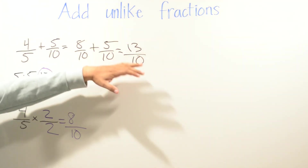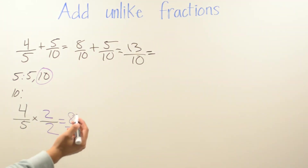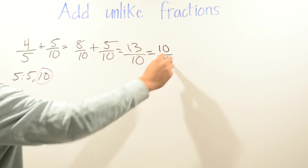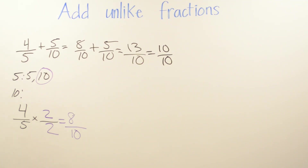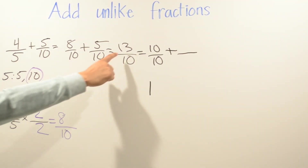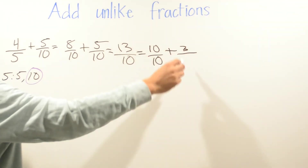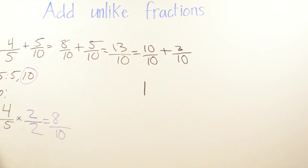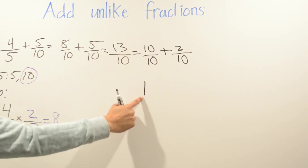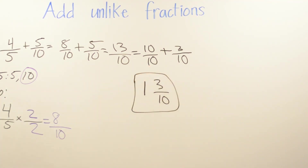Now the denominator 10 is smaller than the numerator 13, so we can write it as a mixed number. Ten-tenths equals one whole. Then how many more do I need to get to 13? I already have 10, so: 11, 12, 13 — I need 3 more. The denominator stays as 10. So written as a mixed number: ten-tenths is one whole, and then 3 over 10. The answer is one and three-tenths.